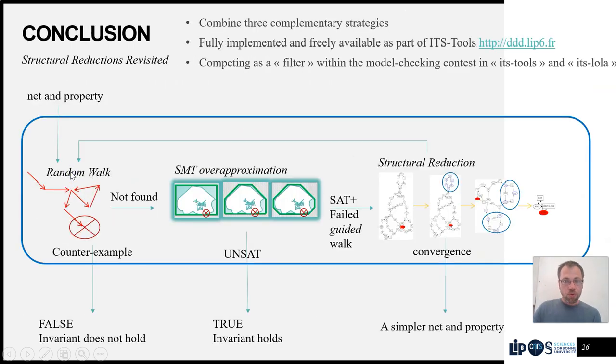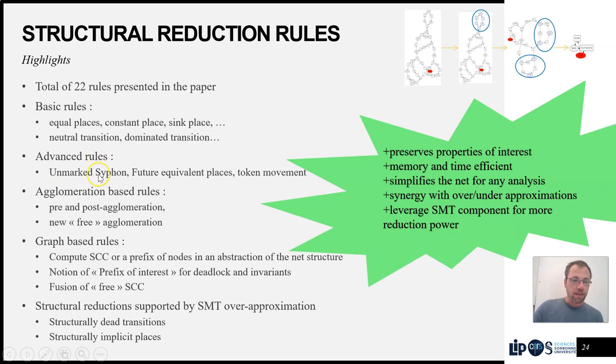And then we have some more advanced rules, like the siphon rule, some rules about future equivalent places. So two places such that for every output transition of one, there's a kind of symmetric equivalent transition that takes from the other one.